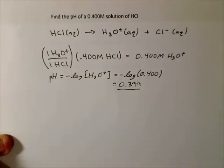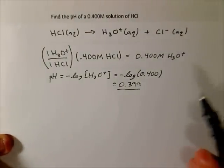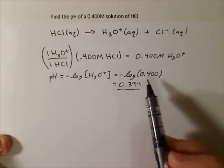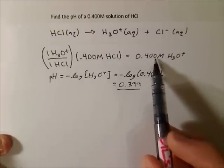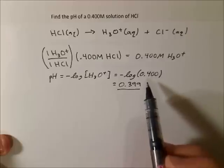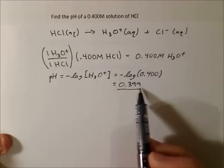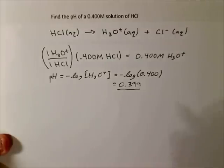And that's going to be our pH. And we check the significant figures. With logarithms, we want to take the total number of significant figures, and that number of significant figures should be past the decimal. And that checks out. That's our pH.